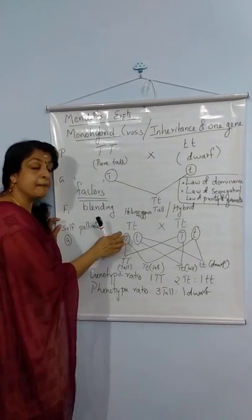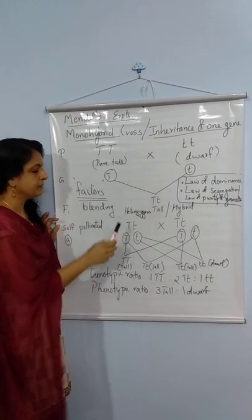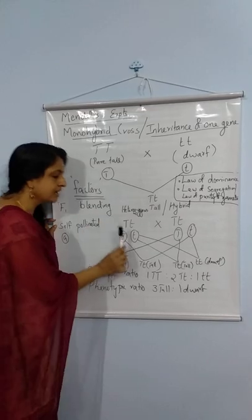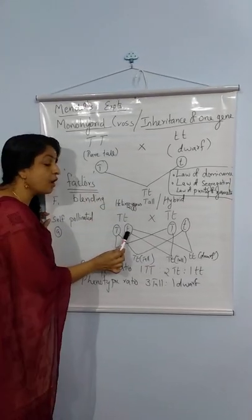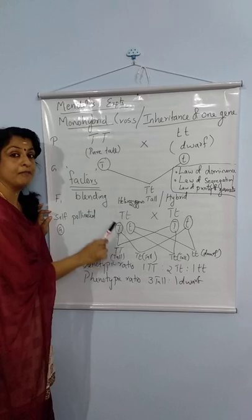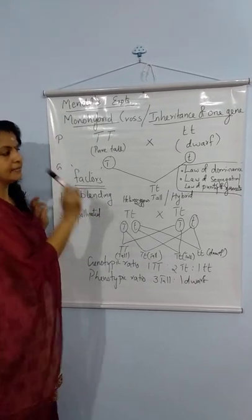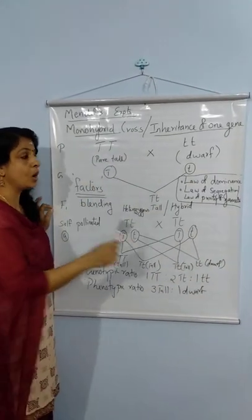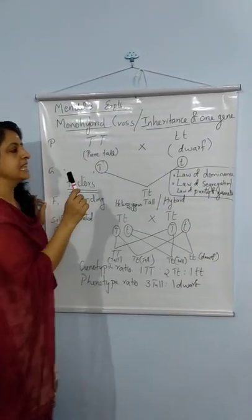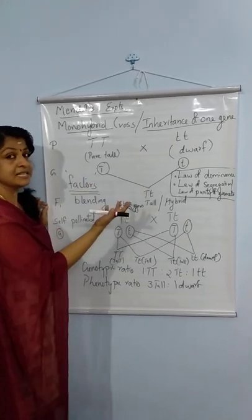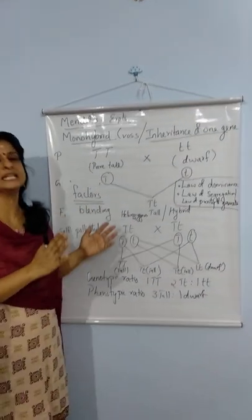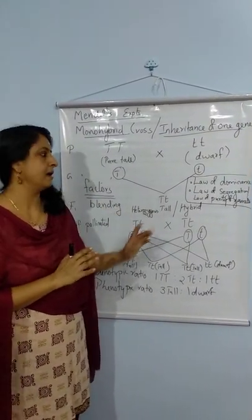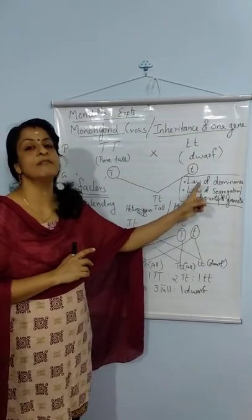The gametes are always pure for the character. If we consider this gamete, it is pure for the character tall. If we consider this gamete, it is pure for the character dwarf. That is why this law is called the Law of Purity of Gametes. It is also called the Law of Segregation because, when gametes are formed, the allelic pair separates independently and each gamete will have only one gene of the allelic pair.